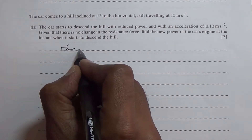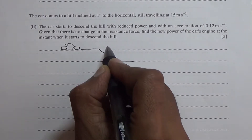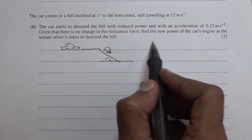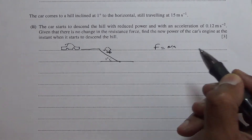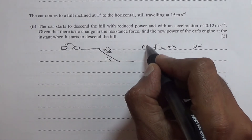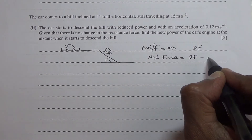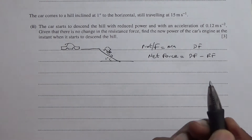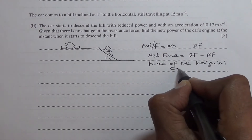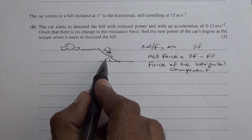Suppose this is the car, and the car comes up to a hill. Now it starts descending — the car is going down 1 degree. We know that force is equal to mass times acceleration, but what is the driving force? We need to find the net force. The net force is equal to the driving force minus the resistive force. But there's something else — this is going down, so we have the component of force along the horizontal direction when the car is going down at a 1-degree incline.